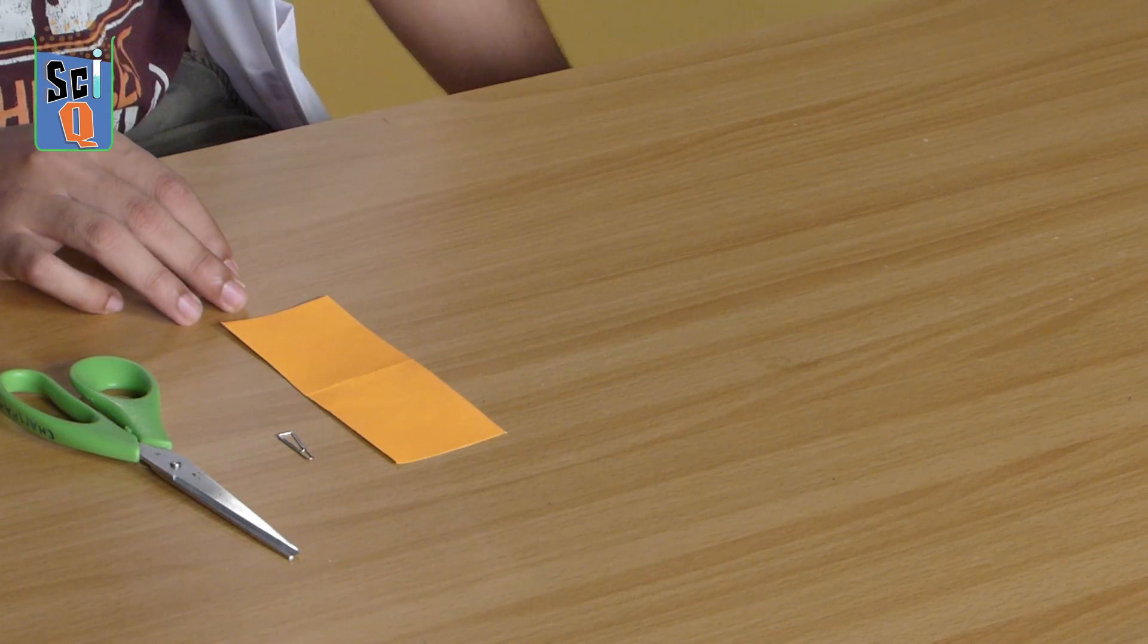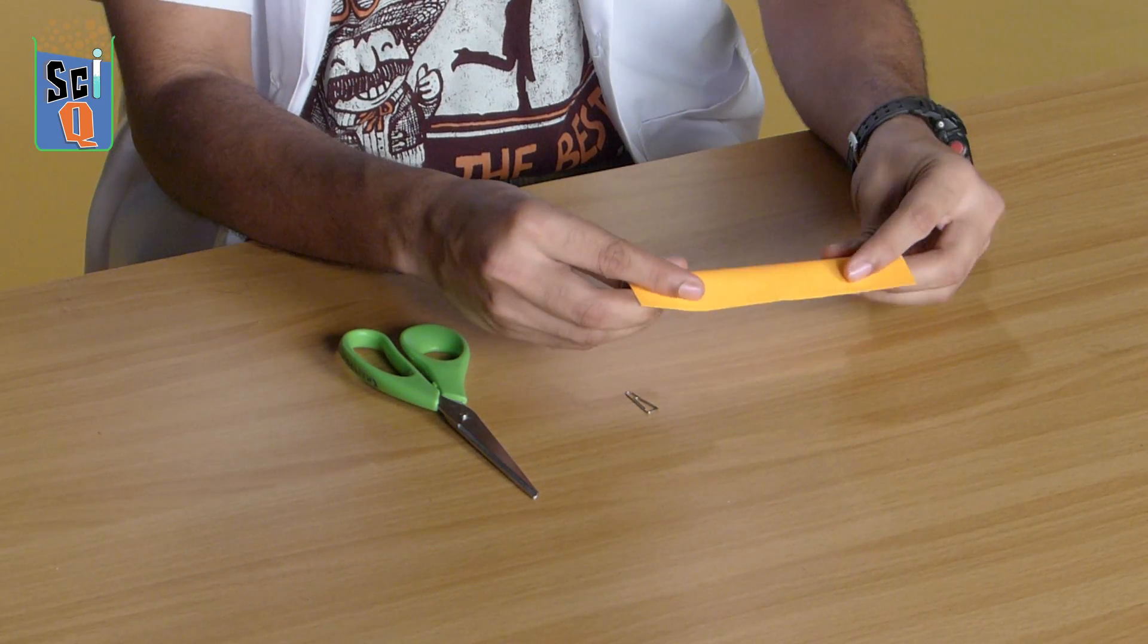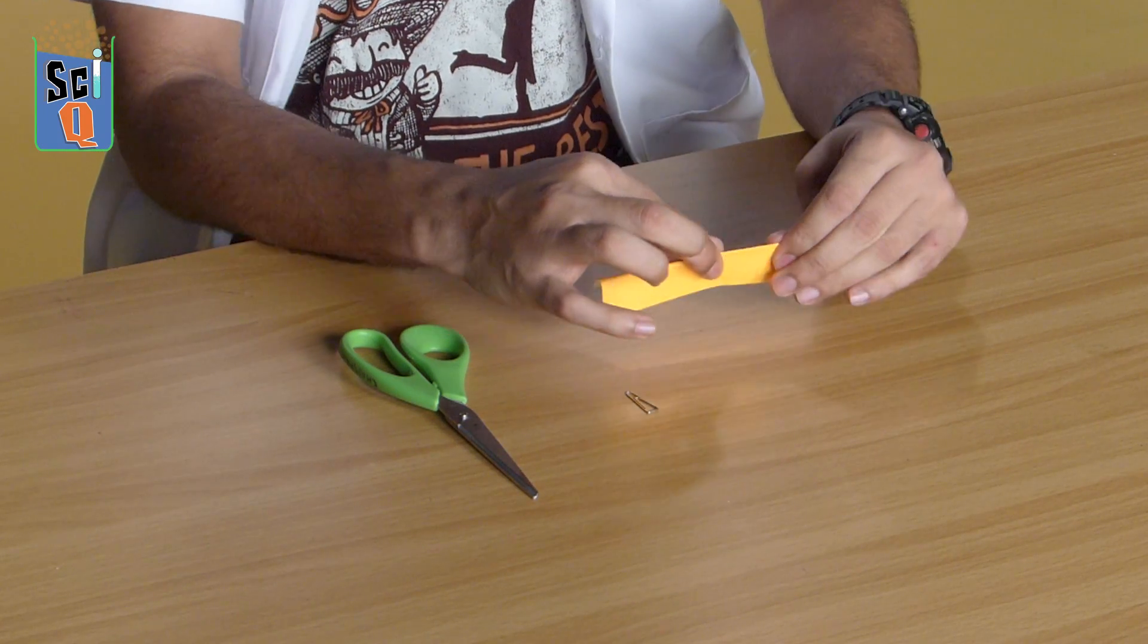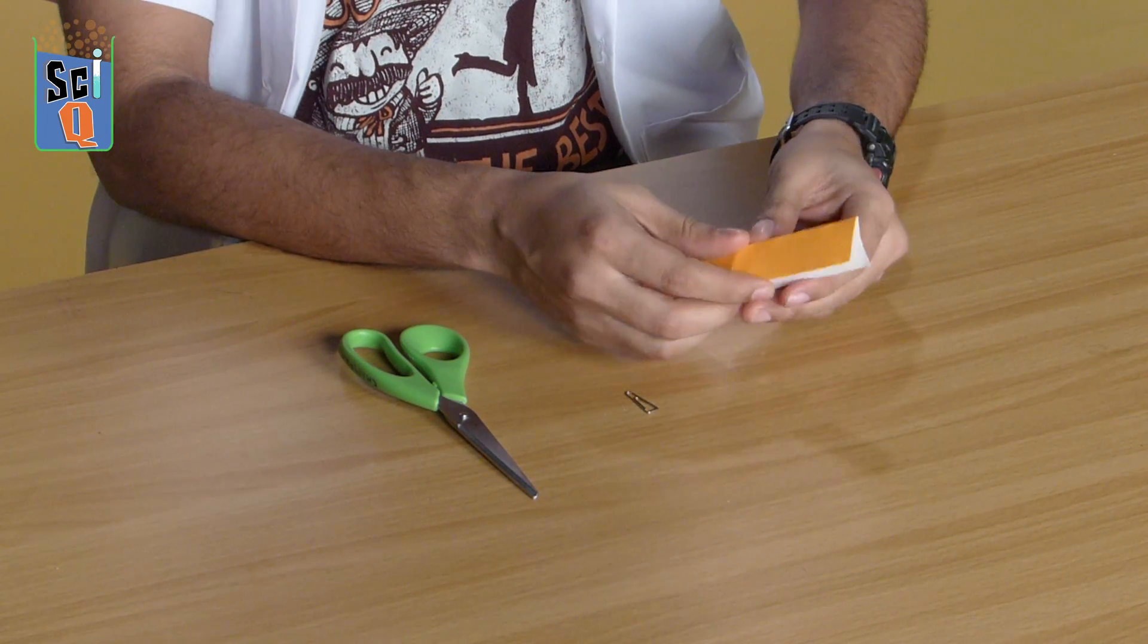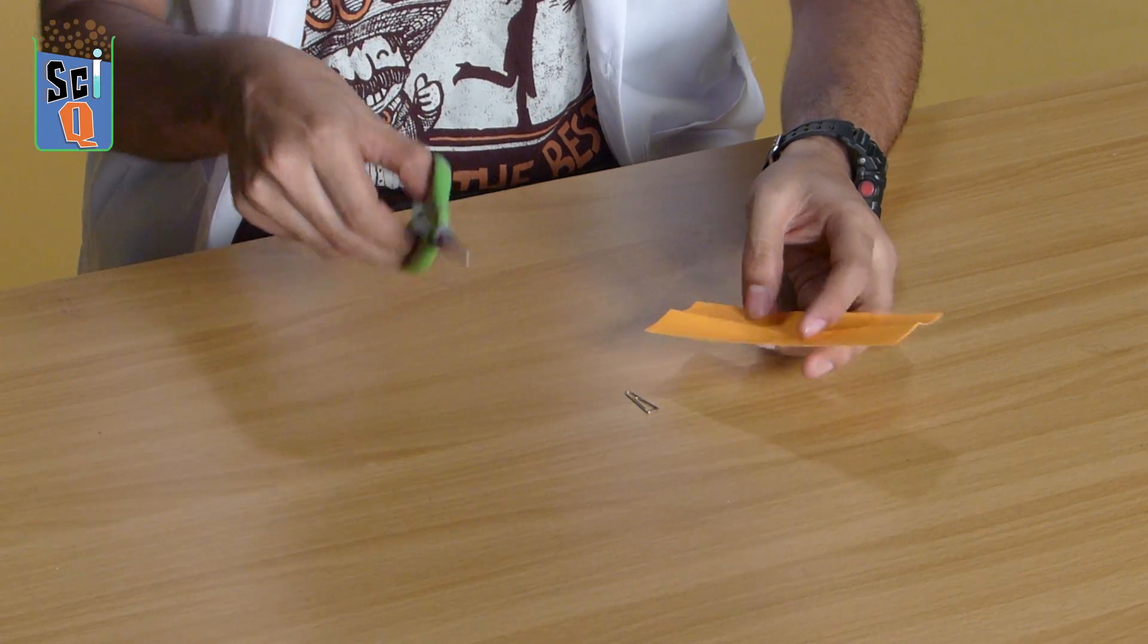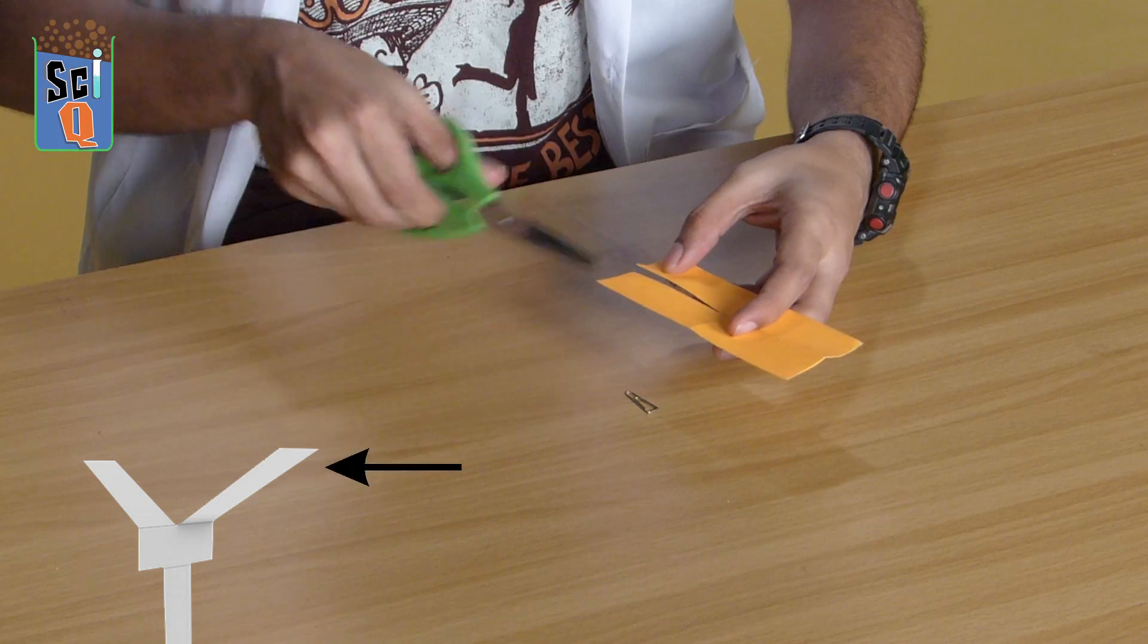So let's start off by taking a little sheet of paper and we fold it along the breadth first and we open it up. Then we fold it along the length. Now the next bit is where the scissors are going to come into play. Now that we've made this fold, we're going to take our scissors and basically cut along this line, right down to the middle. These will make the wings of our rotocopter.